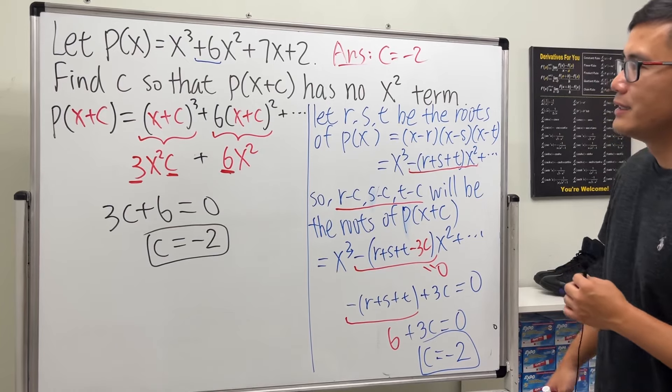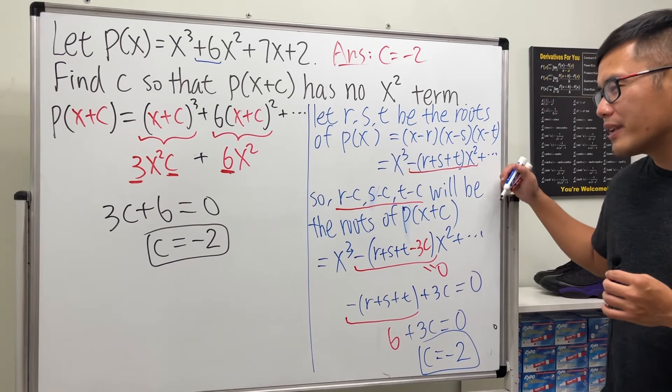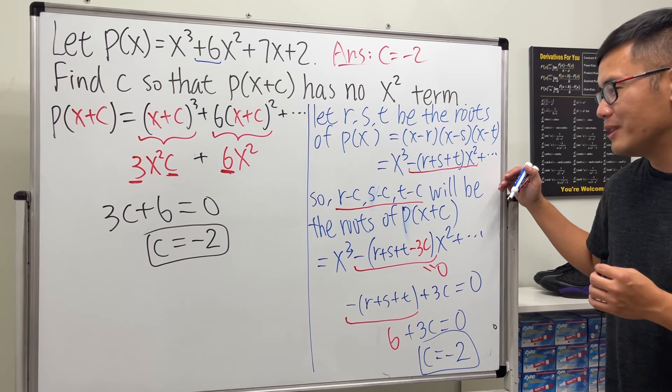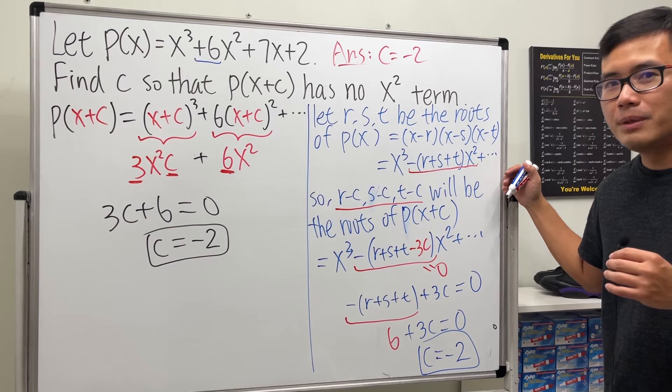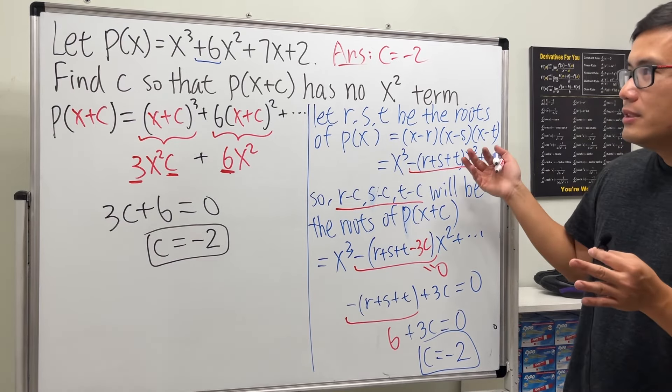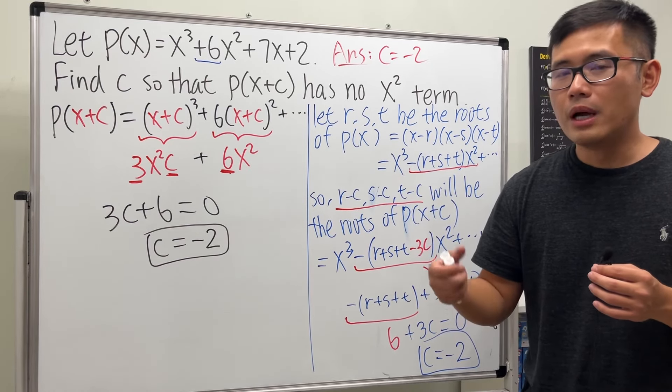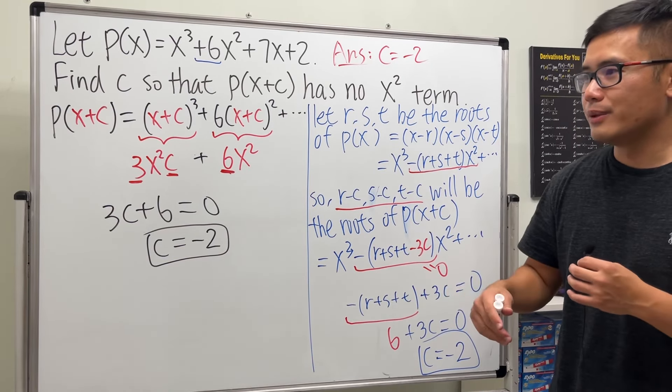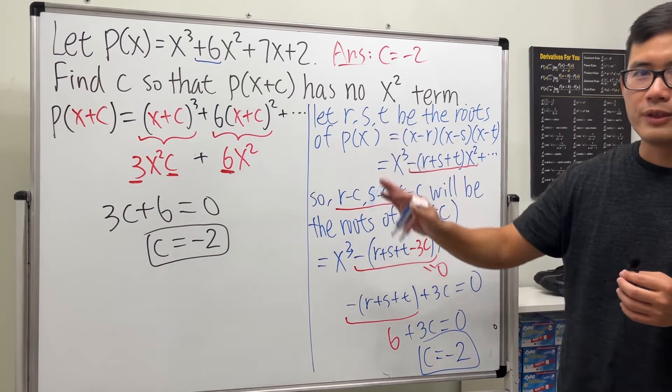I think this way is definitely shorter, but I personally like it better because it's more of the theoretical approach, not just computation. For people who are interested, you can actually use this approach to depress this cubic into x³ + px + q and then continue to solve from there, but I'm not going to cover that.